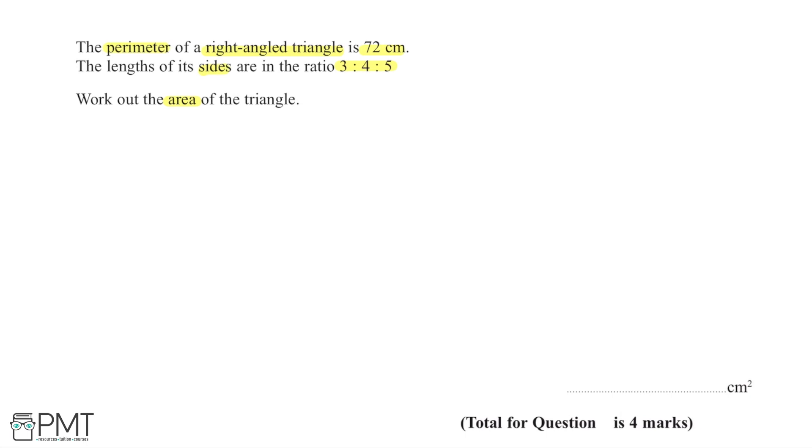A good place to start is drawing a diagram. I'm working with a right-angled triangle with sides in the ratio 3:4:5. The greatest length, represented by the 5 in the ratio, has to be the diagonal of this triangle as that's the longest length.